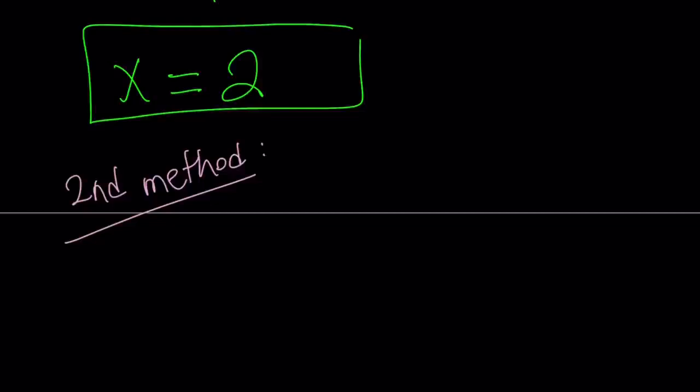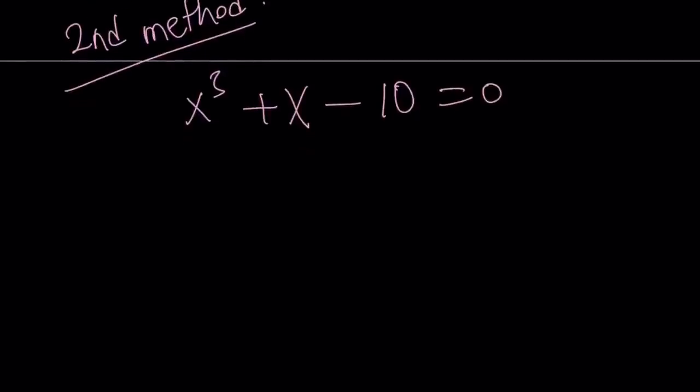Here's my second method. For the second method, let me write the equation one more time. I have x³ + x - 10 = 0. So I can use the rational root theorem. Or just notice that this expression can be written as x³ - 8 + x - 2 = 0.